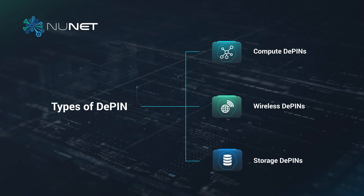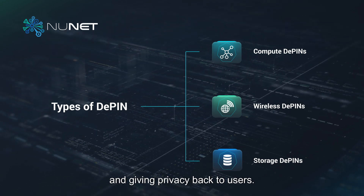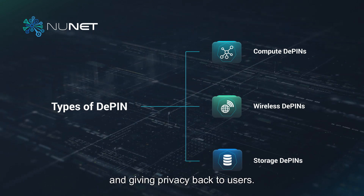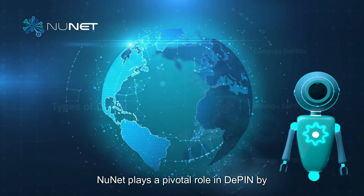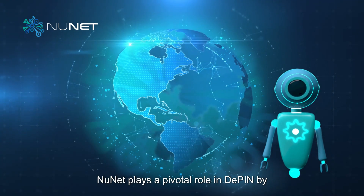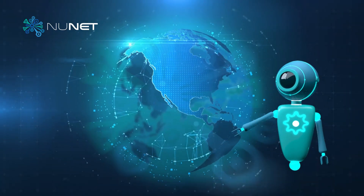Storage DePINs, such as Filecoin, offer decentralized networks with secure and distributed data storage solutions, breaking away from traditional centralized cloud storage and giving privacy back to users.